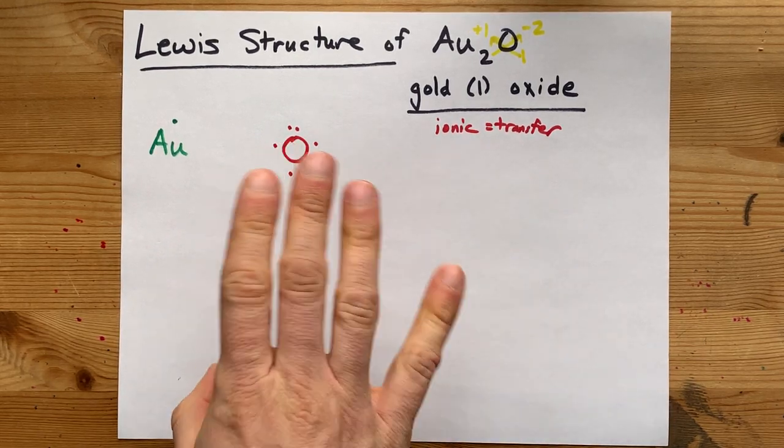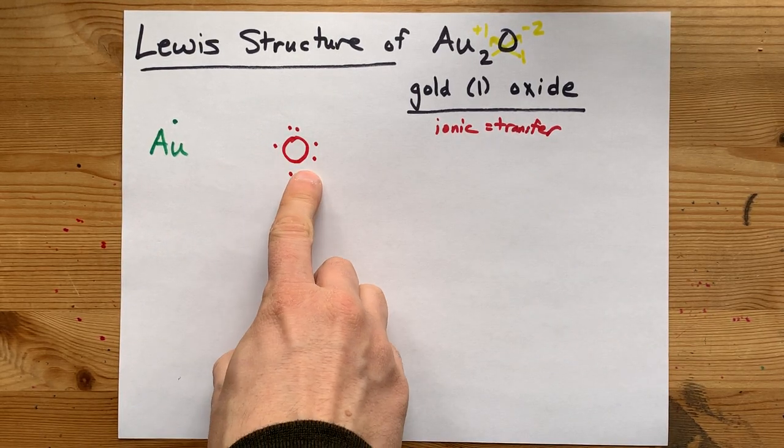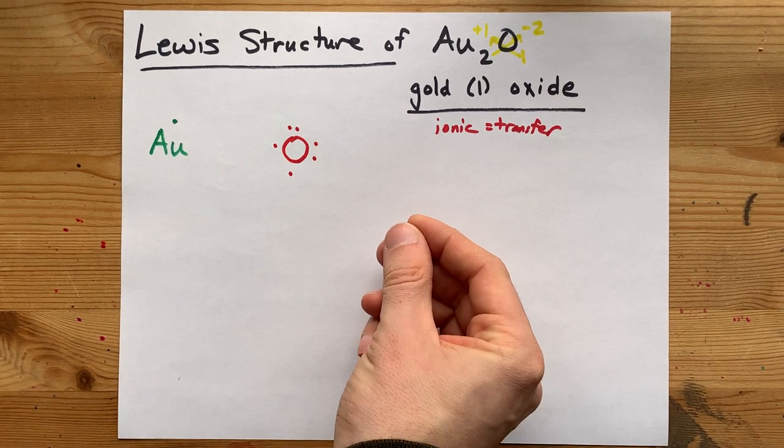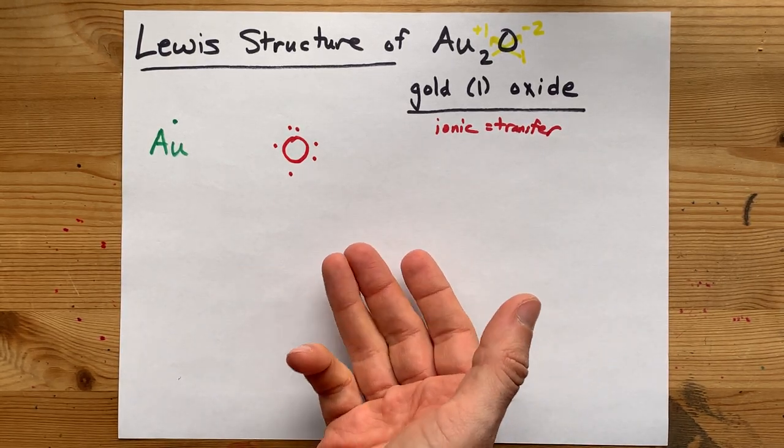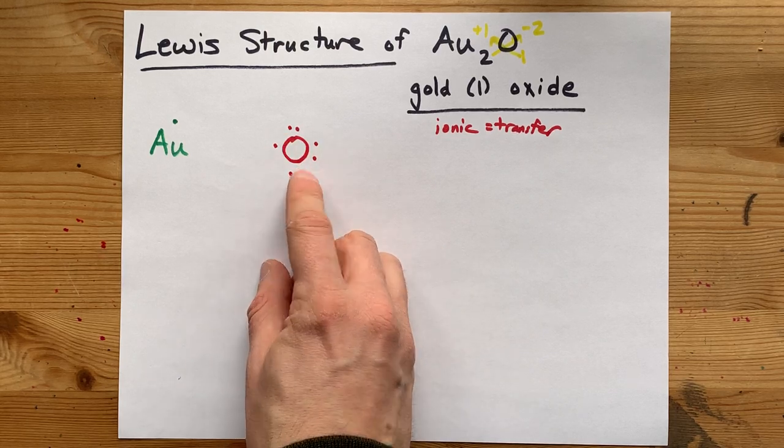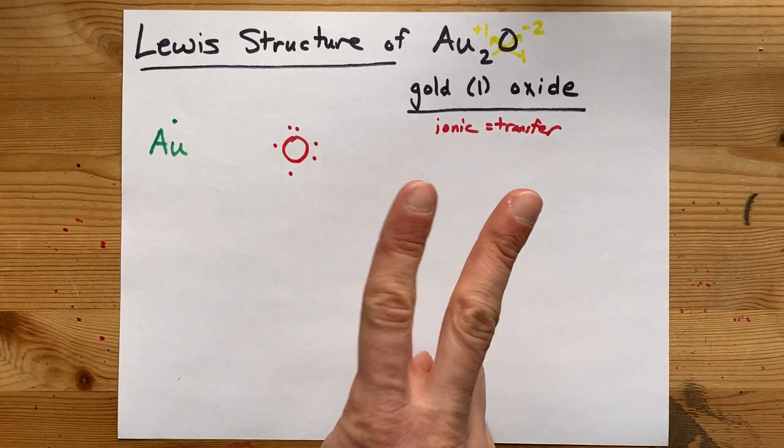The trick behind Lewis structures is that non-metals want a full octet, or eight electrons, in the outer shell. Oxygen here has six already, so it's only two short.